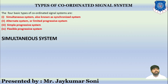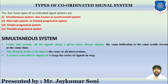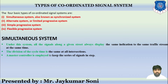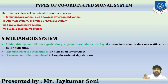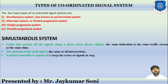Under the simultaneous system, all signals along a given street always display the same indication at the same time. The division of the cycle time is the same at all intersections, and a master controller is employed to keep the series of signals in step. It is called the synchronized system because all signals are in synchronization with each other at each junction.